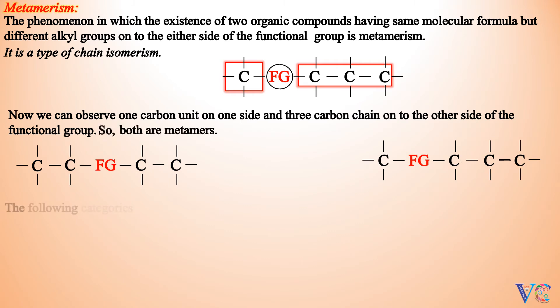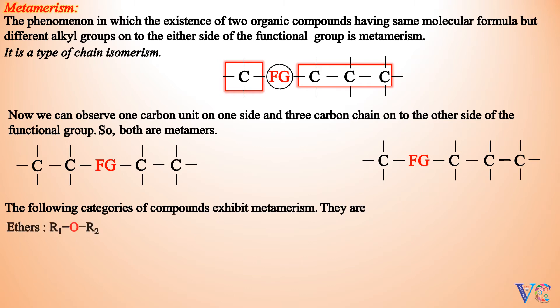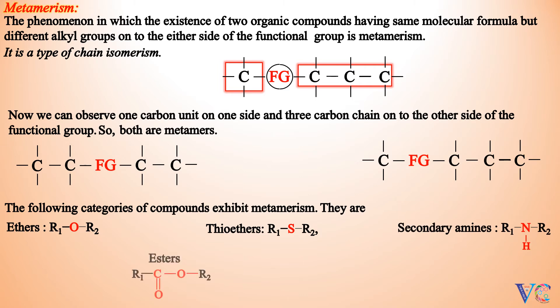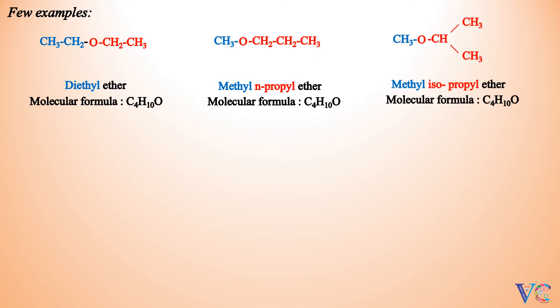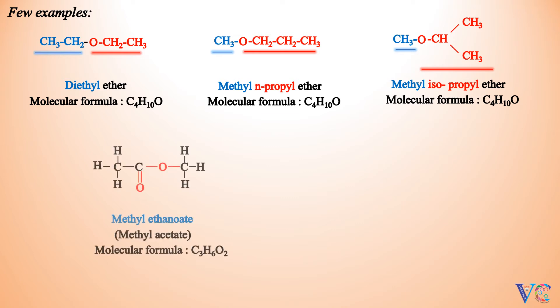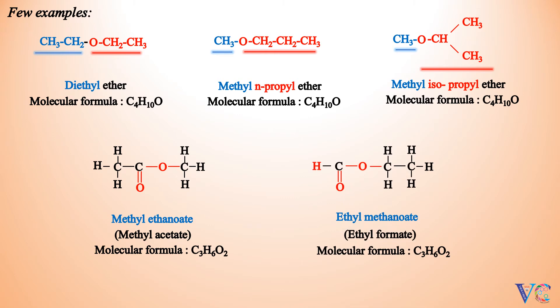The following categories of compounds exhibit metamerism: ethers, thioethers, secondary amines, esters, and amides. Few examples: Diethyl ether, Methyl N-propyl ether, and Methyl isopropyl ether are metamers — we can observe the difference in the alkyl side chains in all three compounds. Similarly, Methyl ethanite and Ethyl methanite are also metamers.